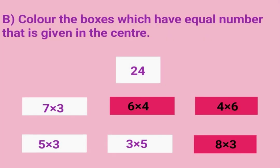Answers for Activity 3B: Color the boxes which have a number equal to the number given in the center. Here we can see: 6×4 is 24, 4×6 is 24, and 8×3 is 24. So those three boxes should be colored.